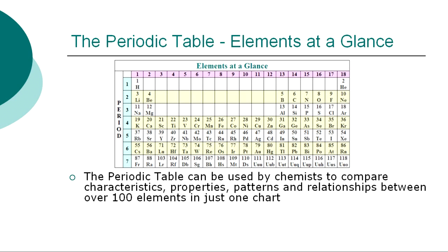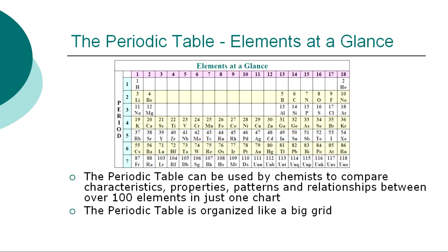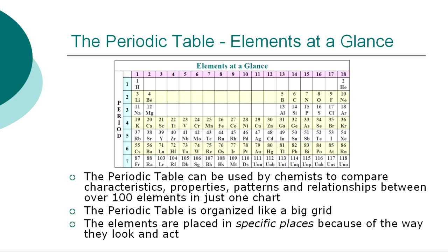The Periodic Table is used by chemists to compare characteristics, patterns, and relationships between over 100 elements in just one chart. The elements are organized in a big grid containing rows and columns. This is made possible by using short symbols to identify the elements rather than long names. The elements have not been added randomly — they are placed in specific places on the table because of the way they look and act.